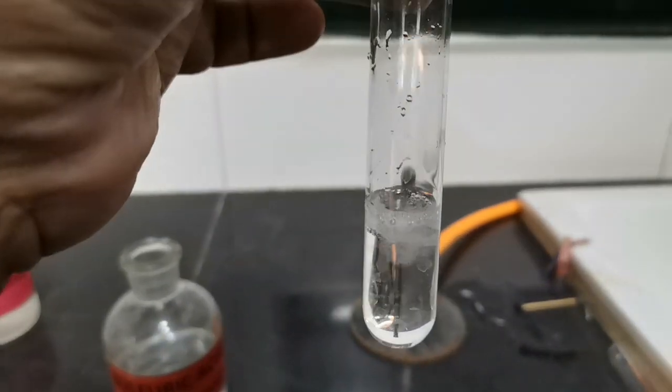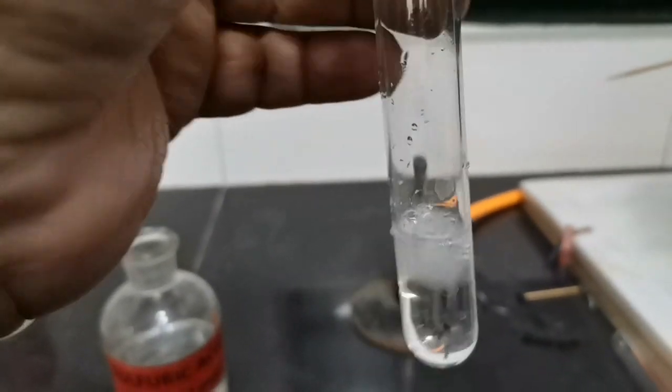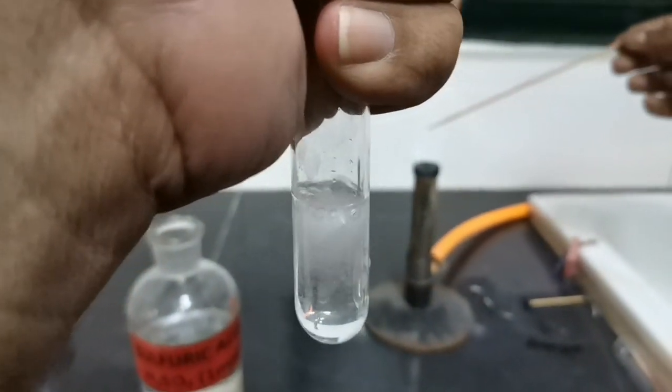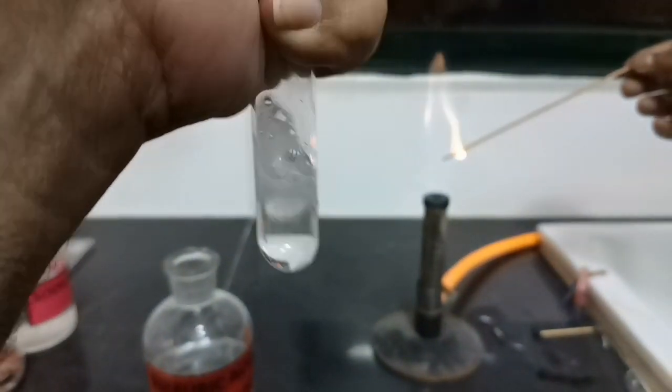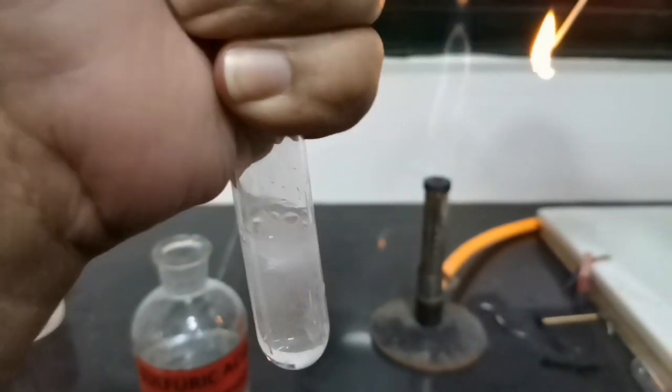Now we have added the magnesium ribbon into this tube and the magnesium has started reacting with the acid to produce hydrogen gas. I have placed my thumb on the top of the tube to prevent hydrogen gas from escaping and collect it.